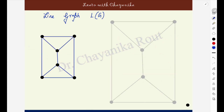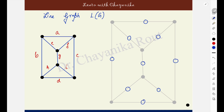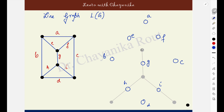Let us see one another example. Here the edges are A, B, C, D, E, F, G, H, I. So you are having 9 edges — correspondingly you will be having 9 vertices in the line graph. You can label them as A, B, C, D, E, F, G, H, I in the same way as you have labeled in the original graph. Now, draw the adjacencies.